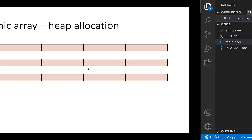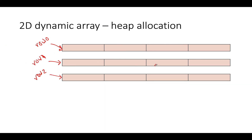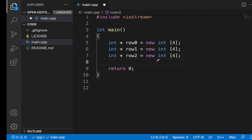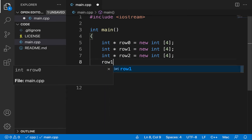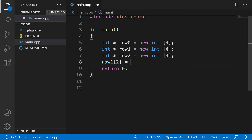Now if I want to access an element — say I want to assign it the value five — I first decide which row I need, which is row_one, then use square brackets with index two, since the indices are zero, one, and two. So I write row_one[2] = 5.